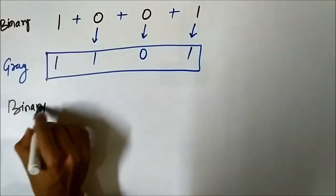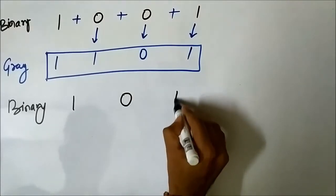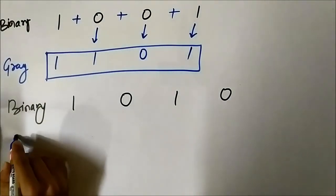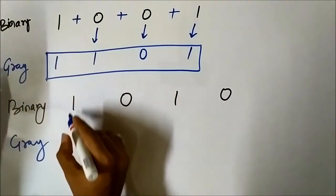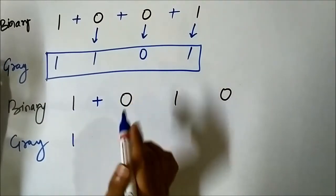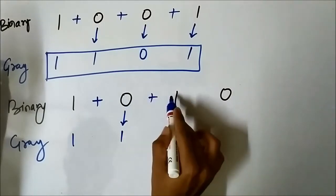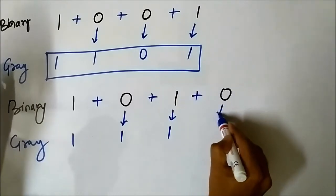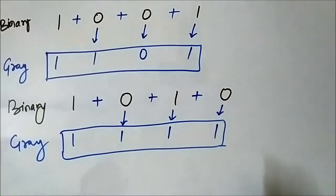Let us take another example. We have the binary code 1 0 1 0 and we have to find its equivalent gray form. The MSB bit of the binary is the same as the MSB of the gray, so we copy it. Then 1 plus 0 is 1, next 0 plus 1 is 1, again 1 plus 0 is 1. So the required gray code is 1 1 1 1.